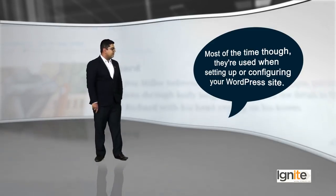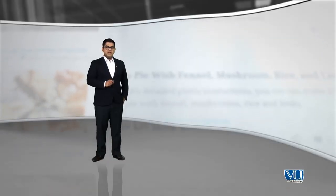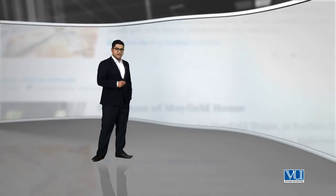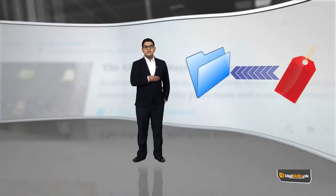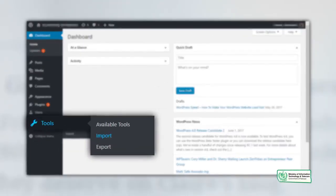Mostly aap tools ka use karenge Categories and Tags Converter ke liye. Categories and Tags Converter karta kya hai — but ab it has been deprecated. It's available as a plugin, but yeh tool aap ko alag se install karna padega. By default WordPress mein available nahi. So, ek aur tool jis ki hum baat karenge, woh hai Import.